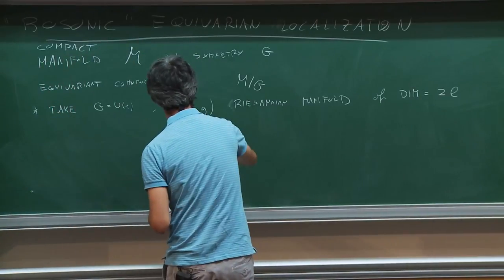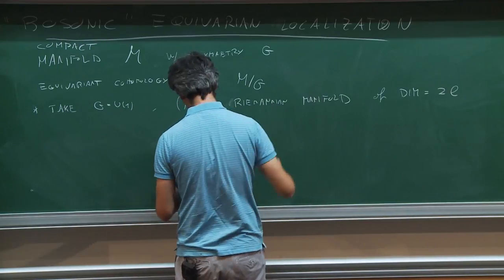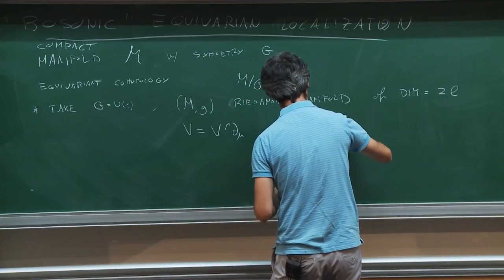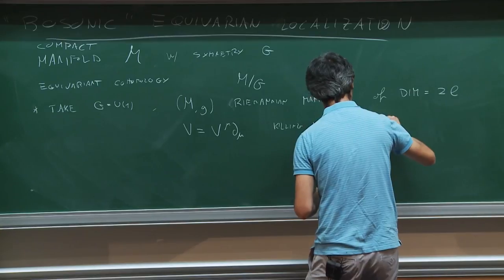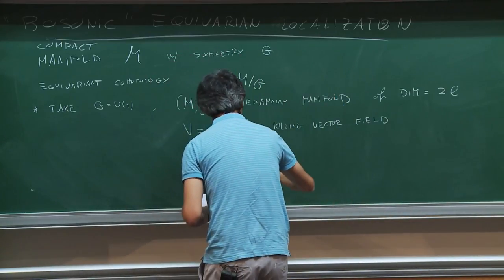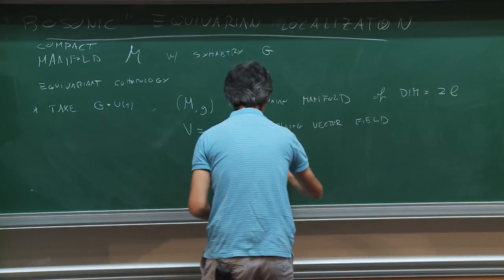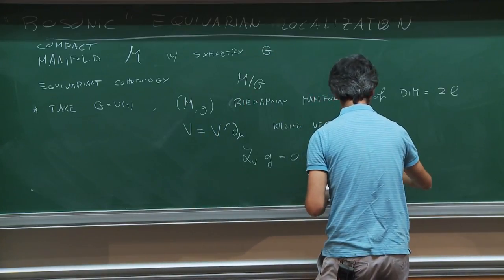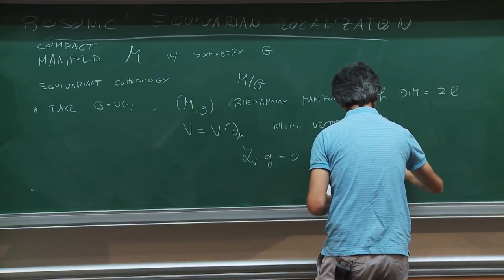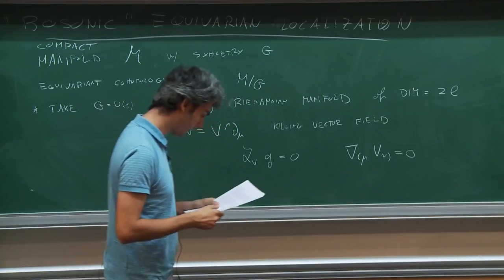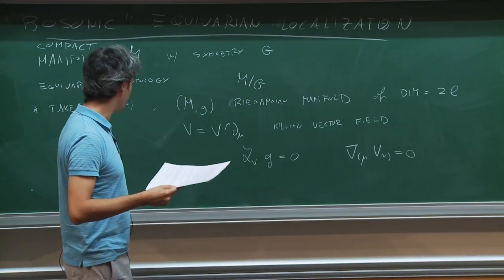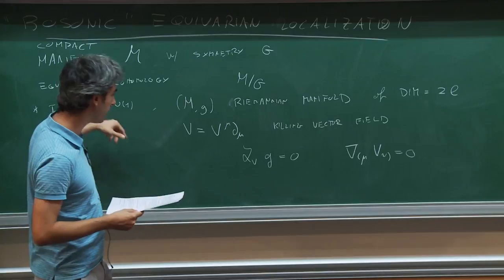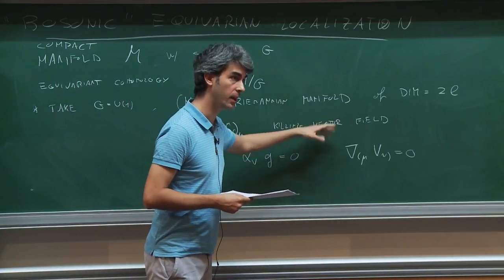Let V, written in components as V^mu d_mu, be some Killing vector field. In particular, the Lie derivative along V of the metric is zero, which is equivalent in components to saying that the symmetrization of the covariant derivative of the vector field is zero — this is the Killing equation. We are assuming that the symmetry G is really compact, so this is really U(1), and there is a common period in the orbits of this U(1) on the manifold M.